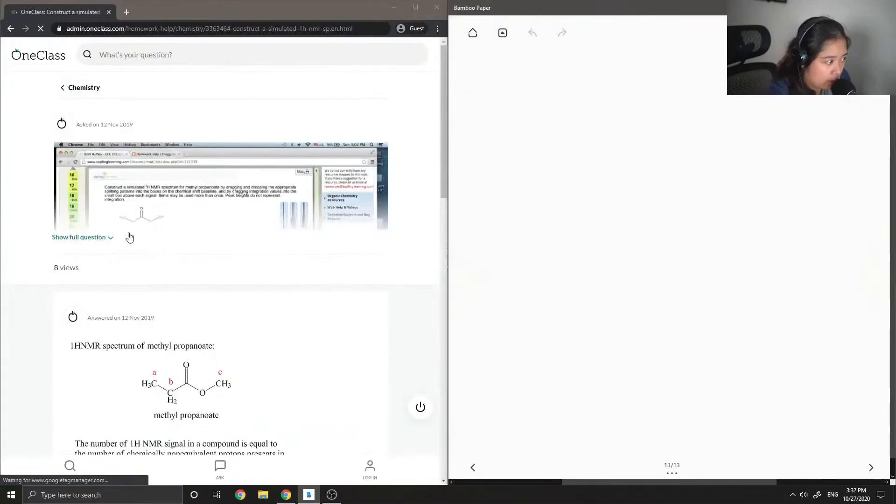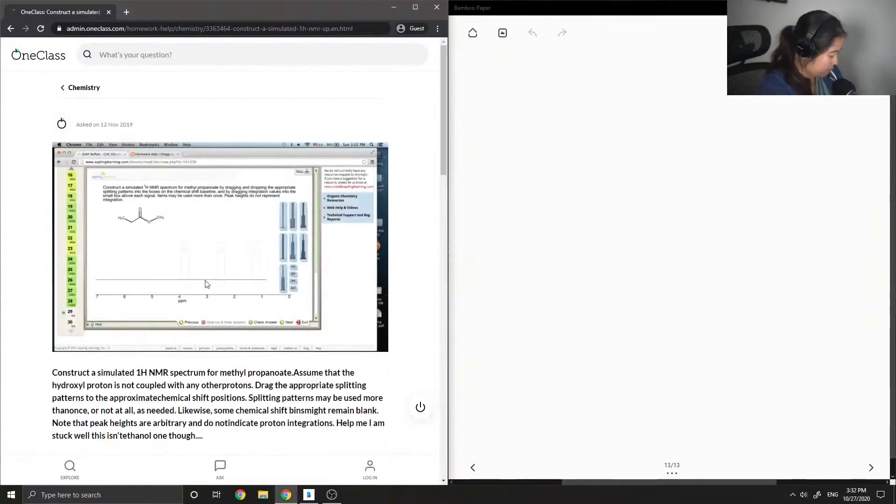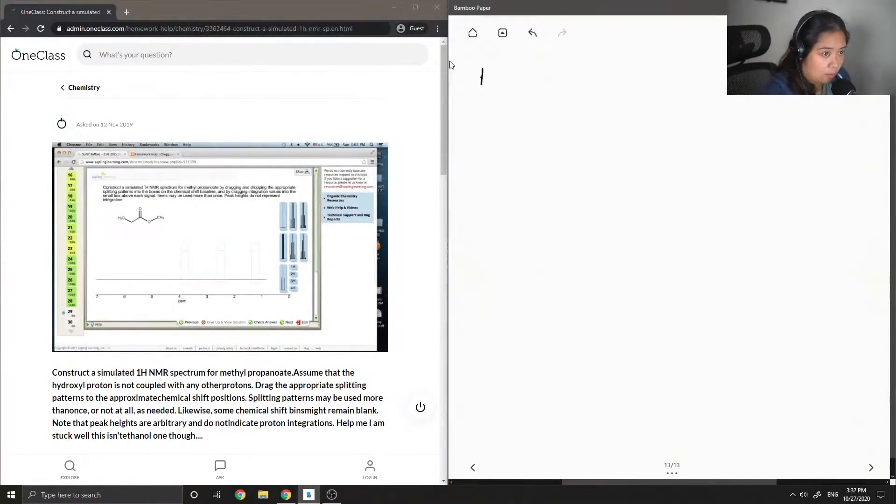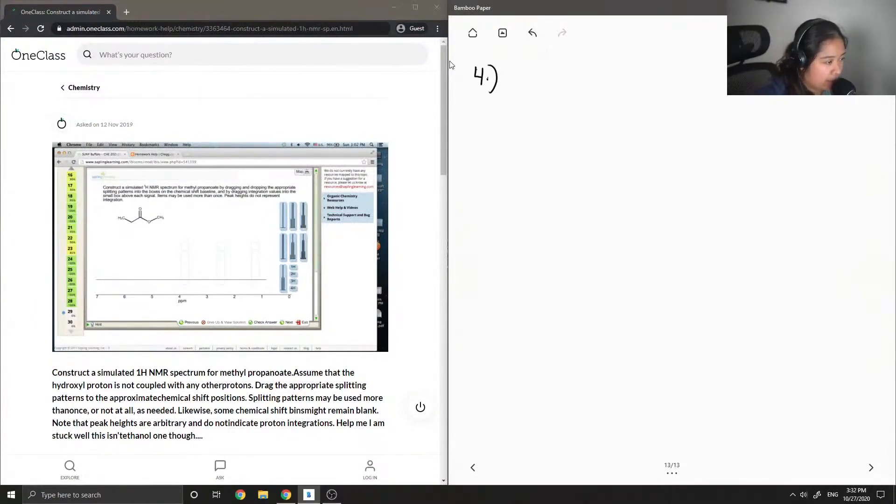Okay, so let's move on to question number four. Construct a simulated HNMR spectrum for methylpropanoate by dragging and dropping the appropriate splitting patterns into the box of the shift baseline and by dragging integration values into the small box above each signal. Items may be used more than once and the peak heights do not represent integration.